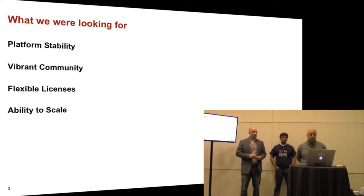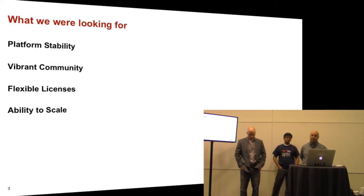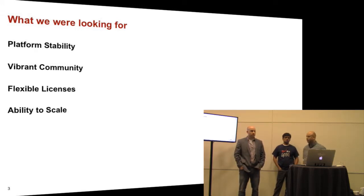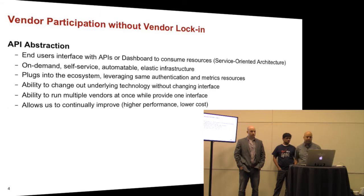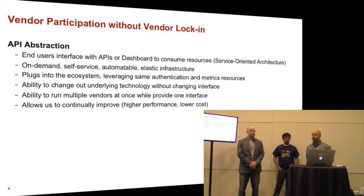When we chose OpenStack, we were looking for platform stability, a large community, open or flexible licenses, and the ability to scale. We did an evaluation back in 2012 and landed on OpenStack. One of the things we really appreciate is the API abstraction layer — it helps prevent vendor lock-in. That's one of the reasons we use upstream OpenStack and roll our own, rather than use a vendor even at the OpenStack layer.